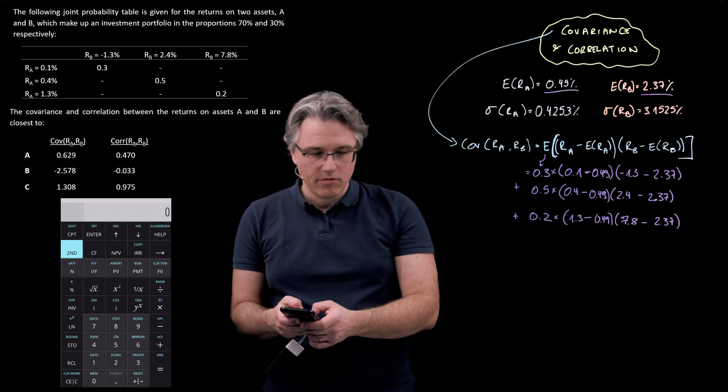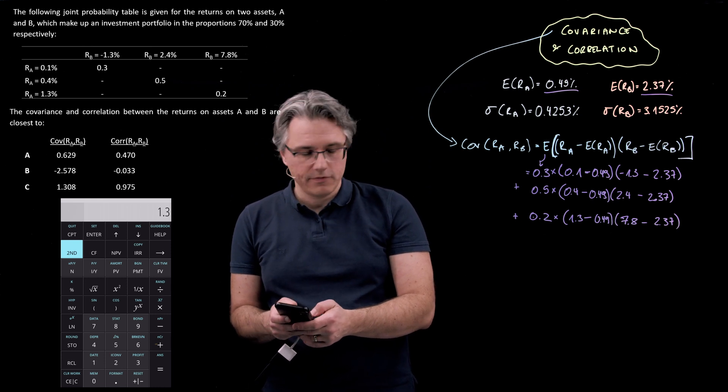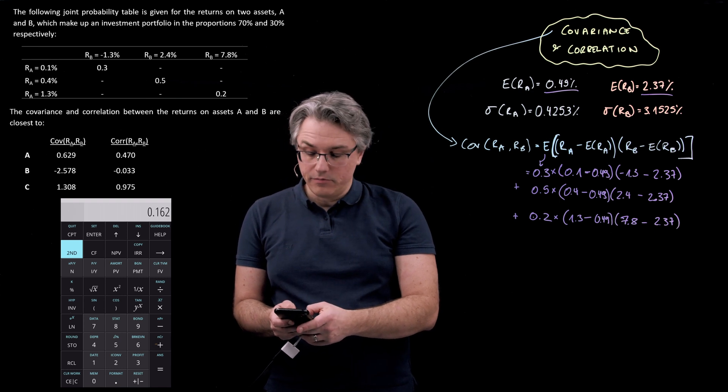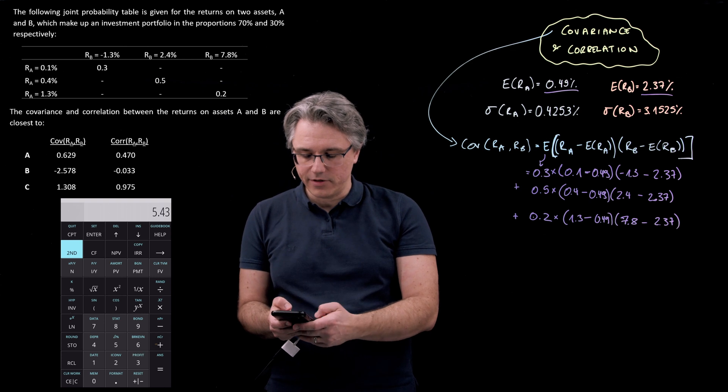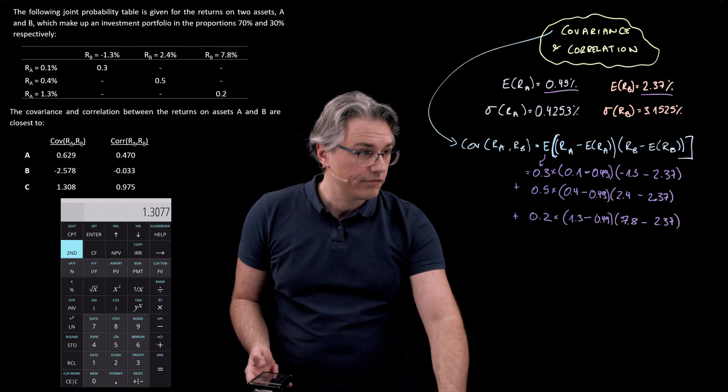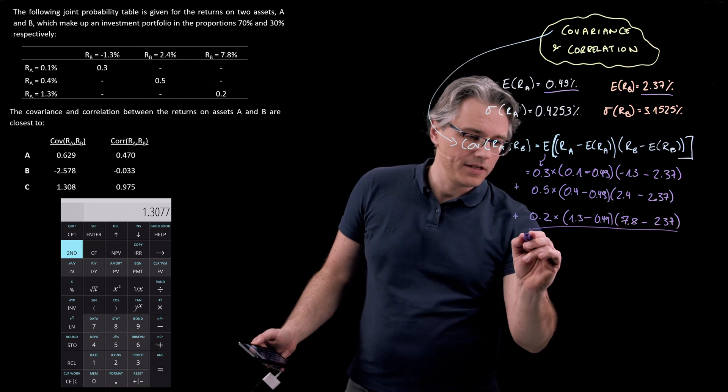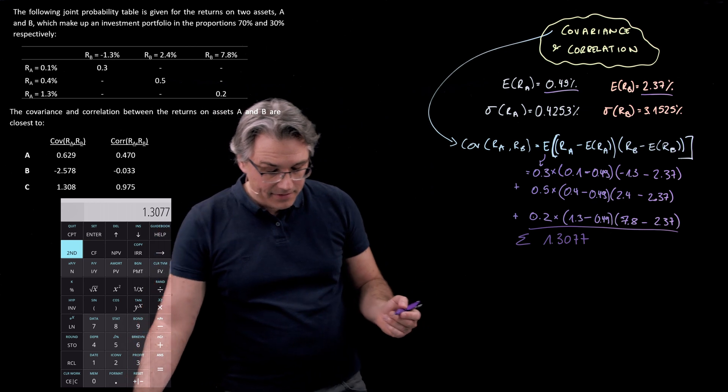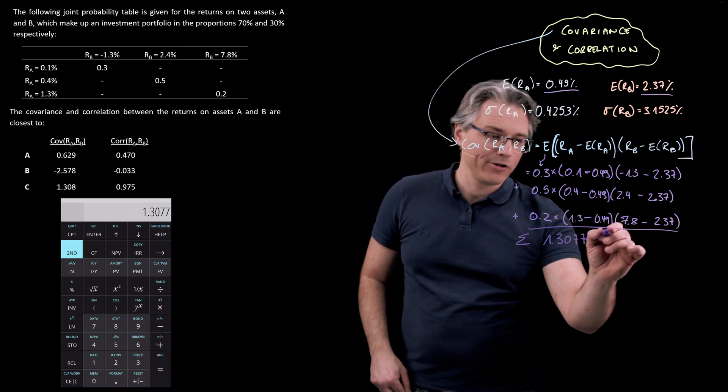Add 0.2 times, once again, open bracket, 1.3 minus 0.49, close bracket, and multiplied by, open bracket, 7.8 minus 2.37, close bracket. Hit enter, and I can see a result of 1.3077. So the sum of all this is 1.3077, and this is indeed the covariance in this problem.